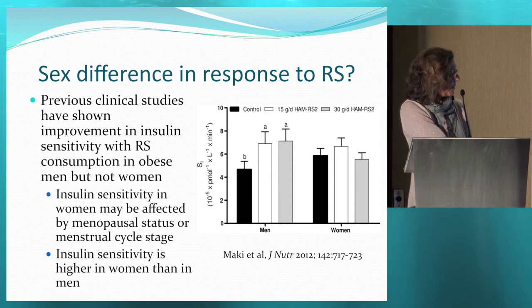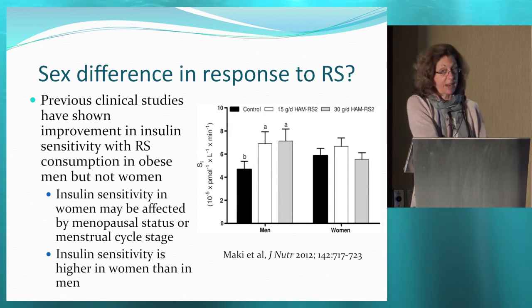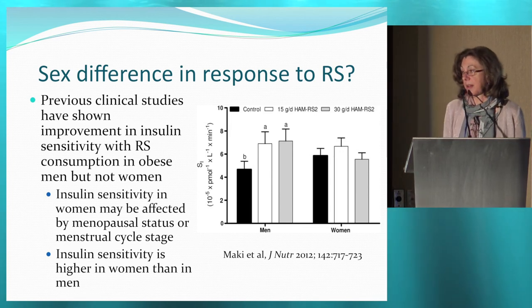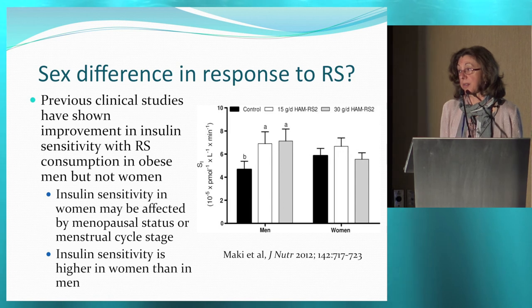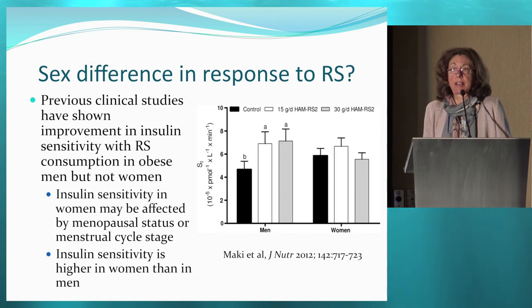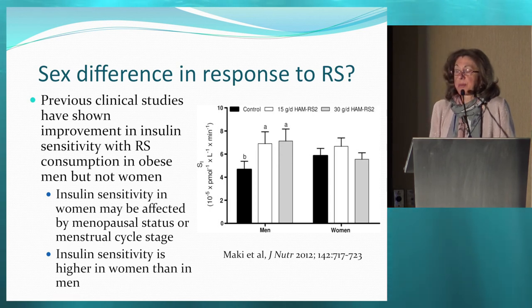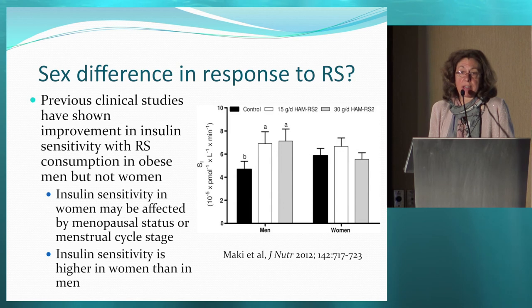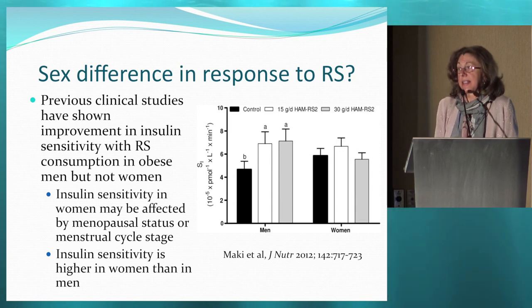You can see in the third group that adiponectin levels were significantly increased by the 36% resistant starch feeding. There have been relatively fewer studies done in humans. This was actually the impetus for the clinical trial I'm going to tell you about today — and that is the sex difference in response to resistant starch.